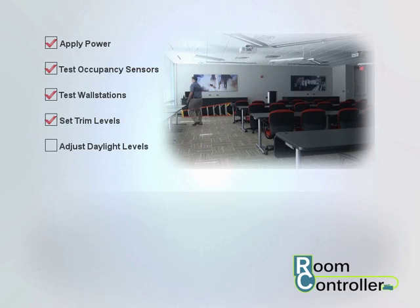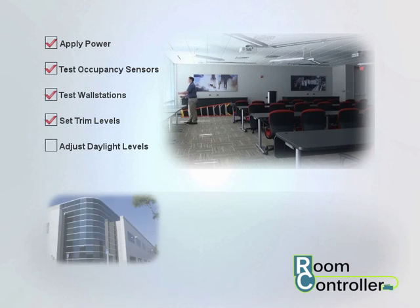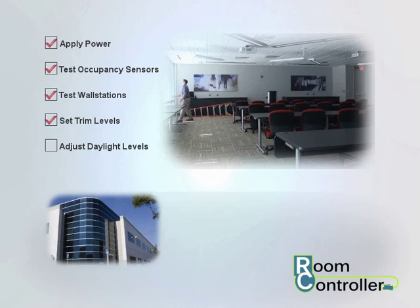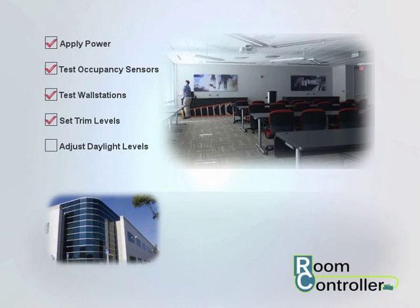To make basic adjustments to the daylight level, first ensure that daylight levels are being set during the day at a time when lighting should be dimming from daylight contribution, but not to the point where loads should be fully dimmed.